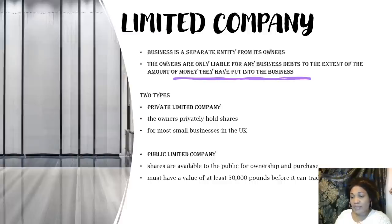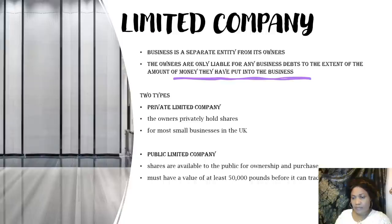We have the private limited company and the public limited company. In the private limited company, the owners own shares privately. If it is a sole trader, he has 100% of the shares. If there are two people, they will have 50-50 or 25-75. For most small businesses in the UK, the private limited company is used.